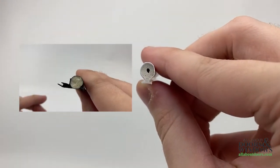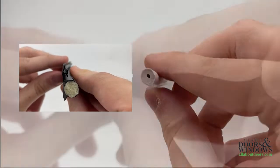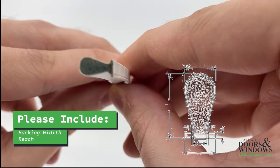Some foam-filled weatherstrips like this one shown have a hole within them which allows for more compression. When contacting us for replacement options, please include the backing width and reach.